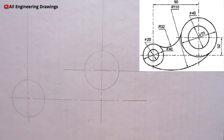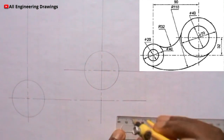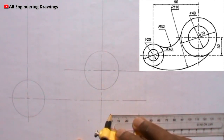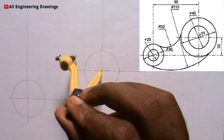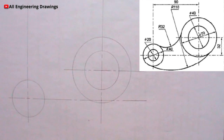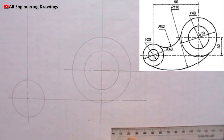The bigger circle here has a diameter of 70mm, that is a radius of 35mm. So I will take 35mm from my ruler and then I will produce the circle. The smaller circle here has a diameter of 20mm, which is a radius of 10mm. So I will take 10mm from my ruler and produce the circle.